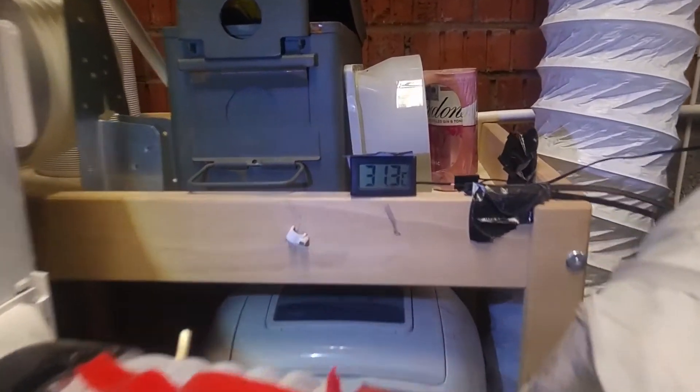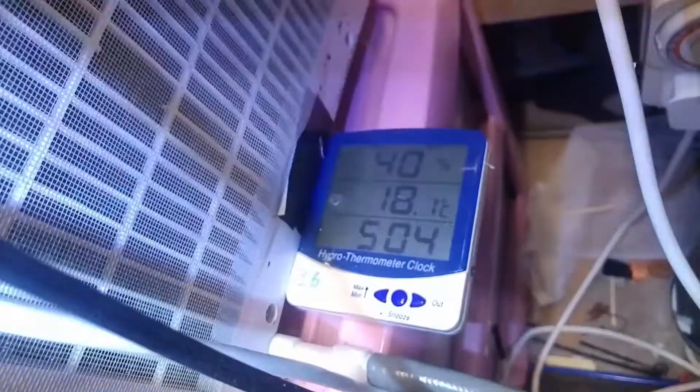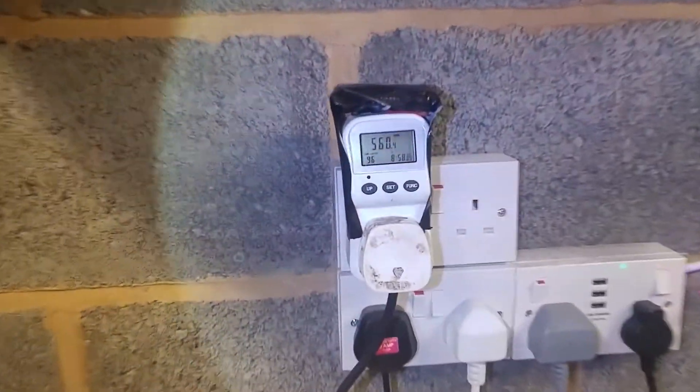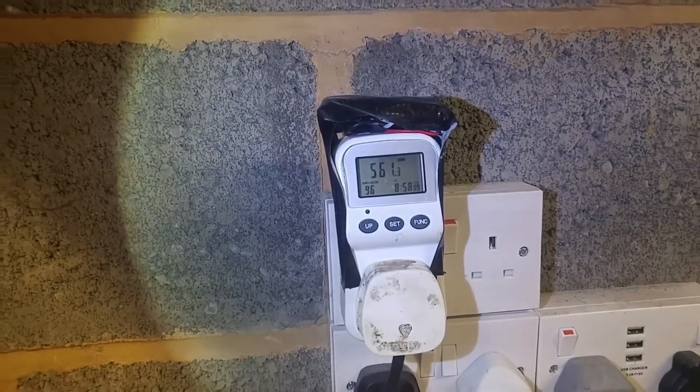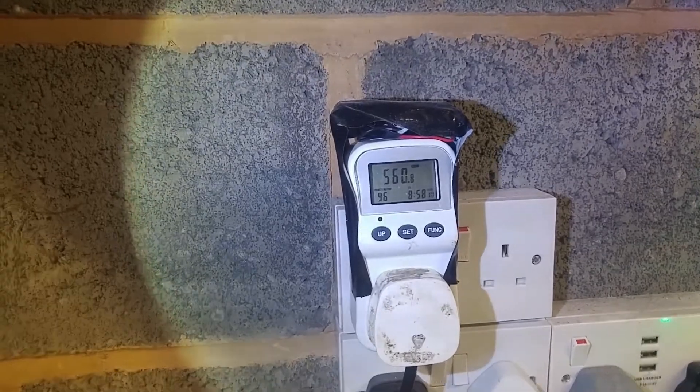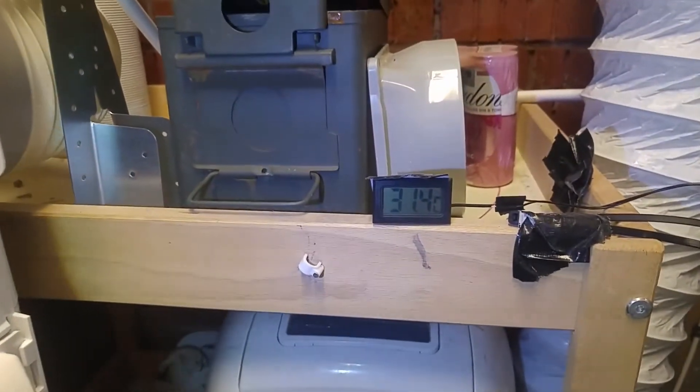So it's leveled out now at about 31.3 on the outlet and 18 on the inlet. And the power is half a kilowatt. So you can already see that it's using half the energy of the fan heater and making more heat with the same air flow. And that's where the free energy is coming from.